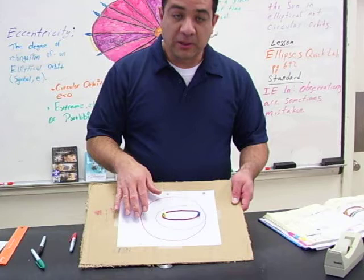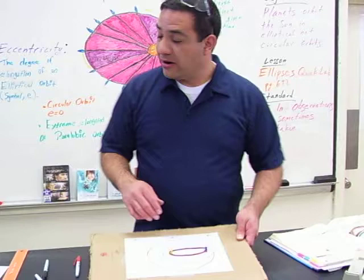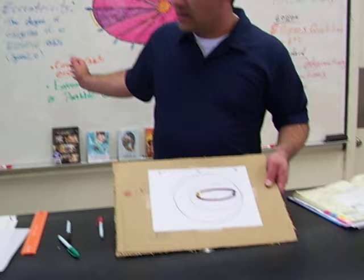Planets like Mercury, Venus, Earth, and Mars have not perfect circular orbits, but close to that, so their eccentricity would be closer to zero. Something like the outer planets — the gas giants — and even Halley's Comet have very elliptical orbits, so their eccentricity would be closer to one.